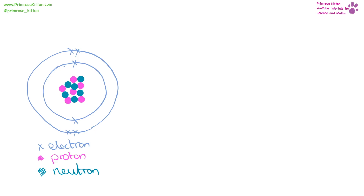An atom is incredibly tiny. The word atom means uncuttable, and it's so tiny that the Greeks who named it an atom thought it was the smallest thing. But it isn't the smallest thing — we know there are things inside of it. Its size is 0.1 to 0.5 nanometers, which is 1×10⁻¹⁰ to 5×10⁻¹⁰ meters.